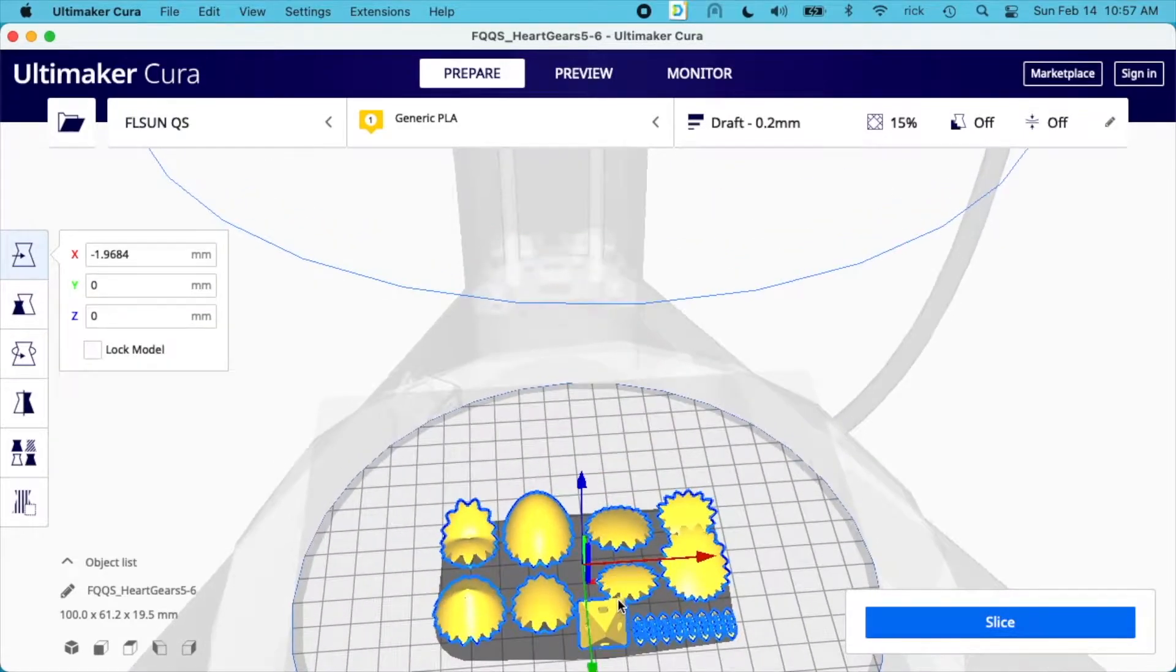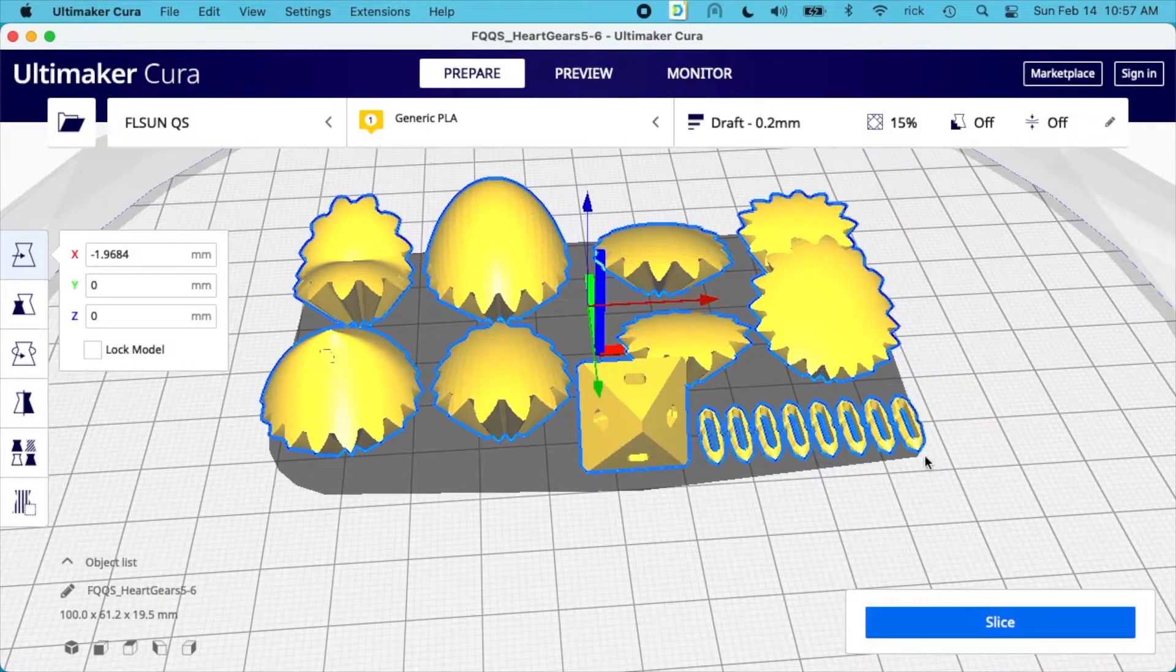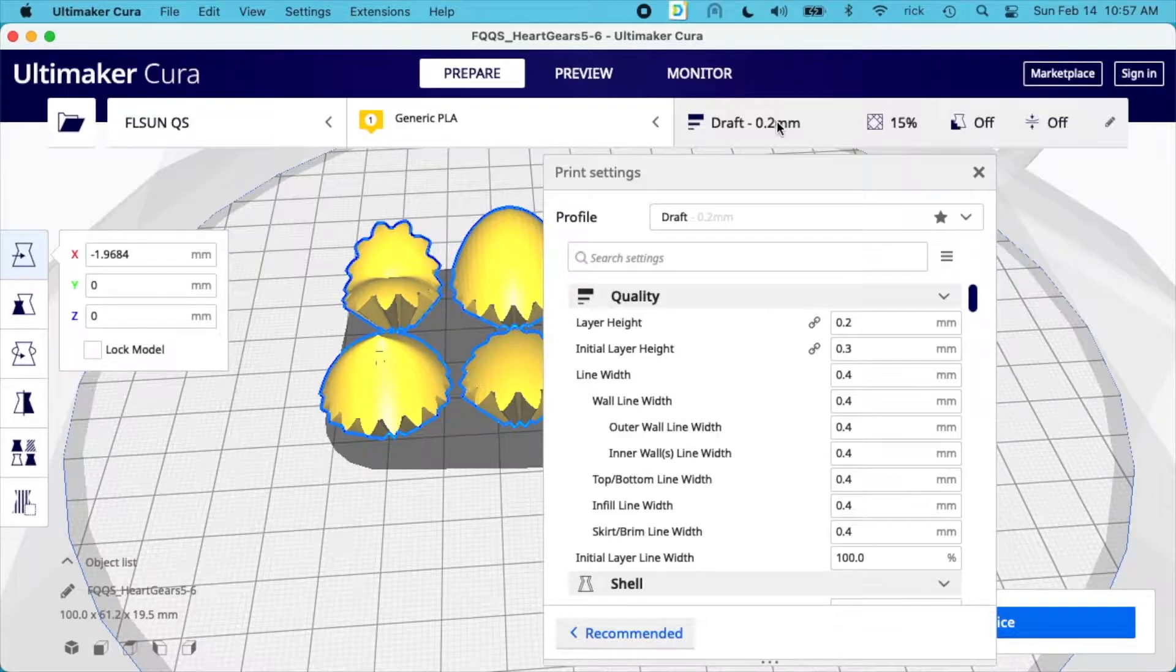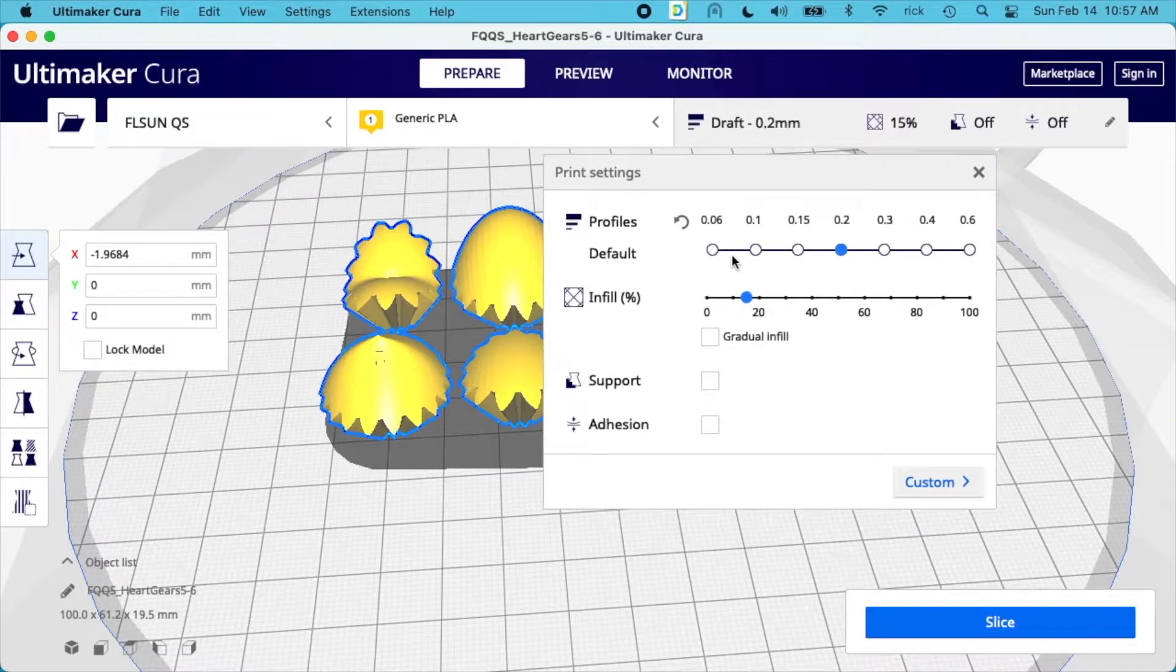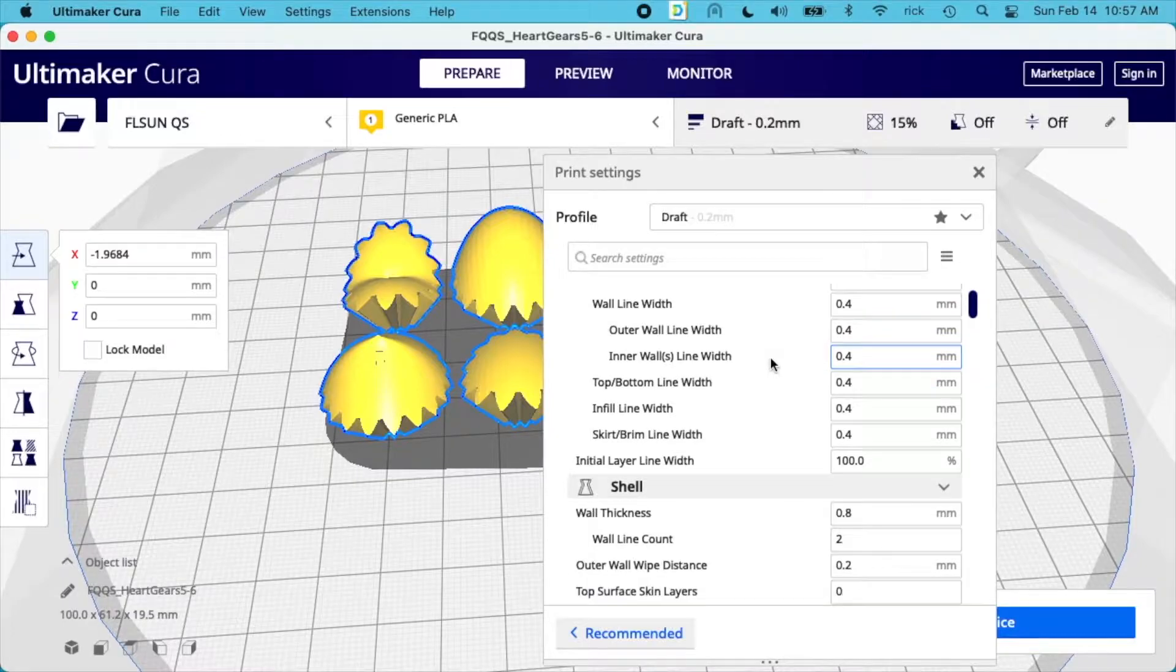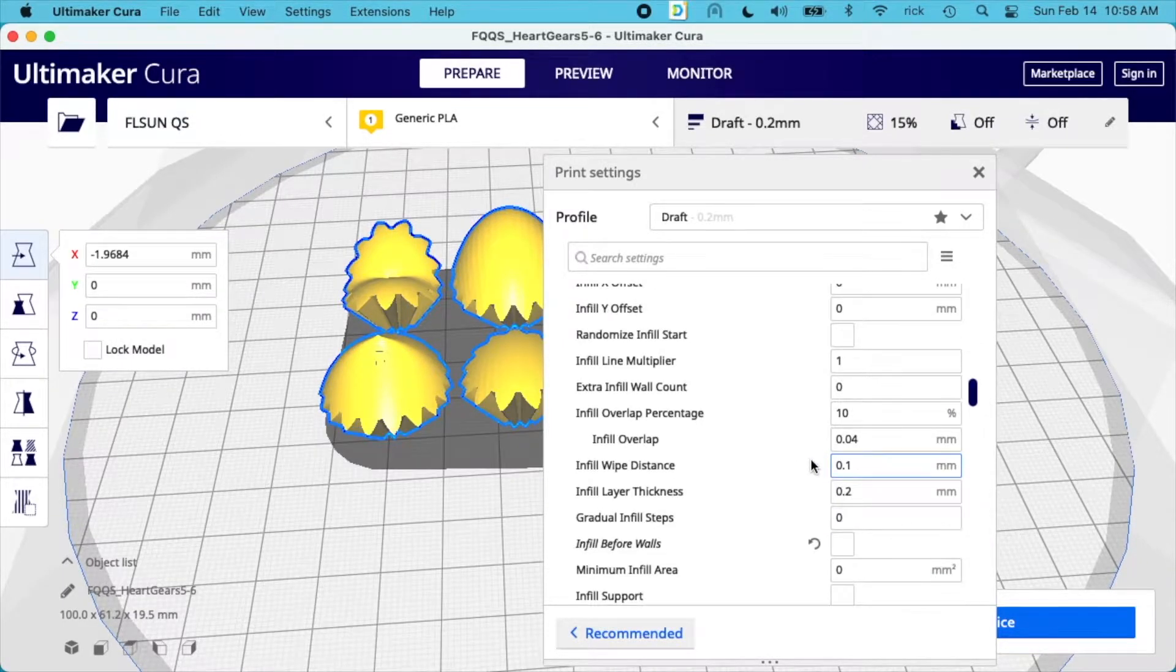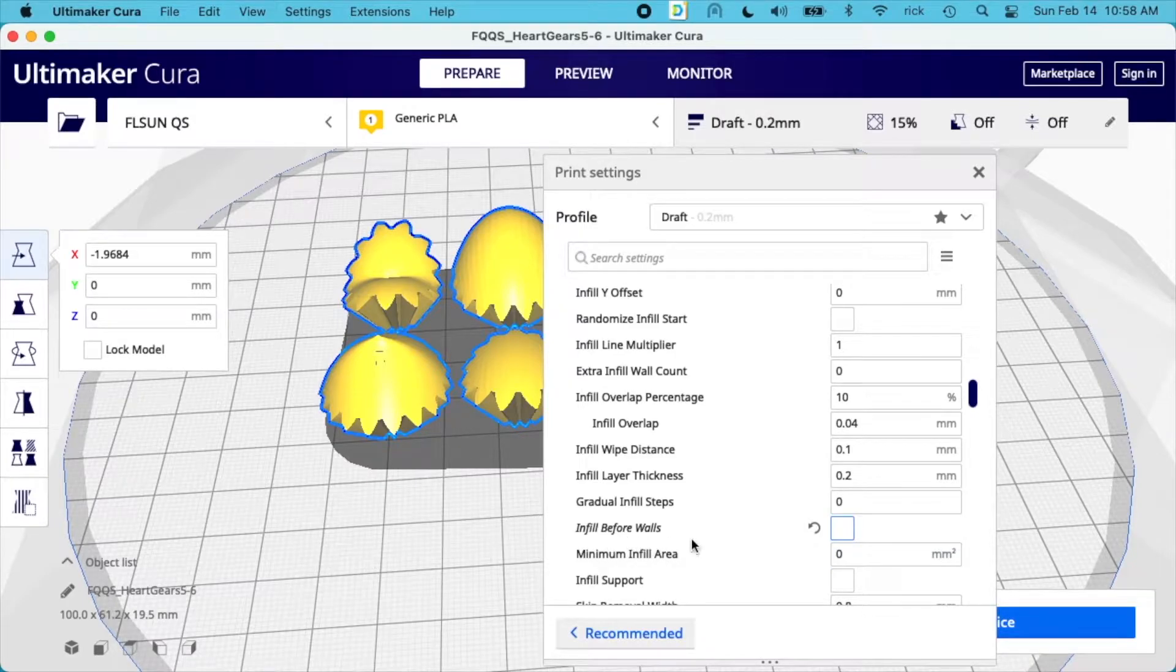You can see all the parts we have here. It has these little pins that hold everything together, we have the middle block, and then we have the different gears. If I go into my settings here, we'll take a look at what I have set up. I'll go to my recommended first, so I have the 0.2 millimeter layer height, the infill I have set to 15, and I have no support and no adhesion. The infill I have set to 15 as I said earlier, and then I have infill before walls turned off.